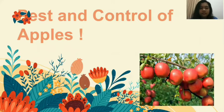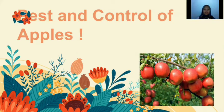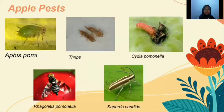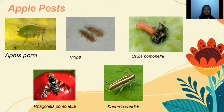The next topic is Pest and Control of Apples. The examples of apple pests are: Aphis pomi, Thrips, Cydia pomonella, Rhagoletis pomonella, and Saperda candida.